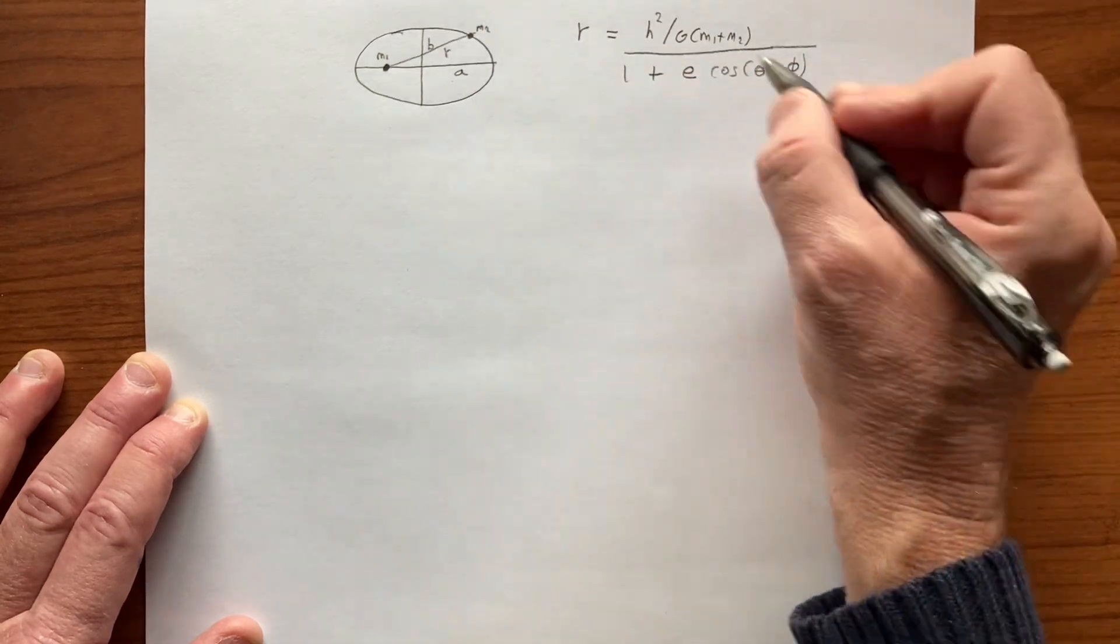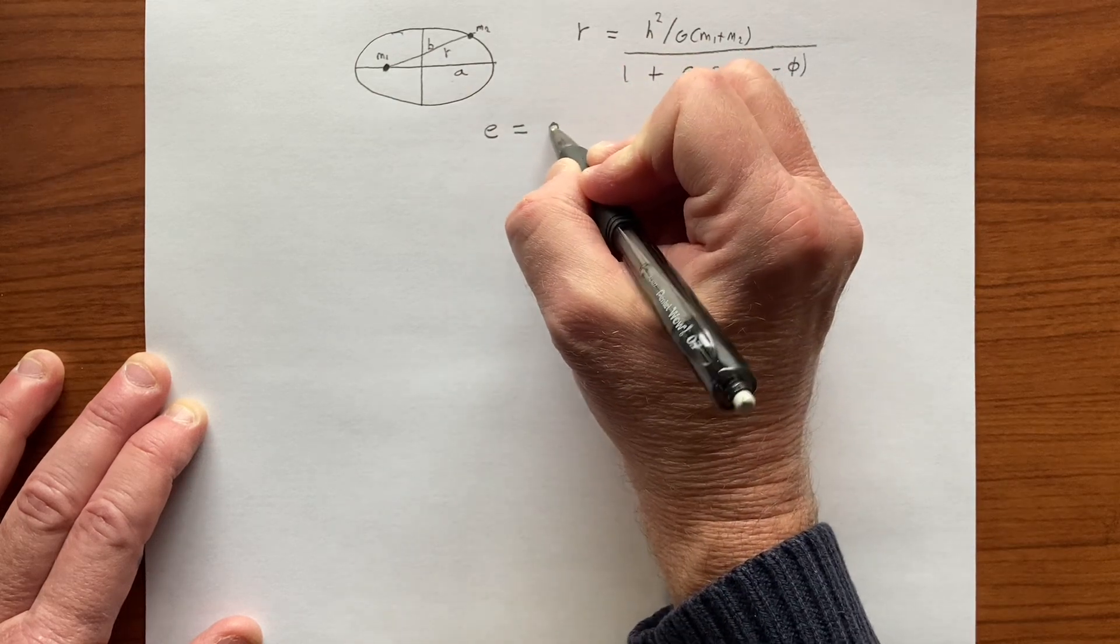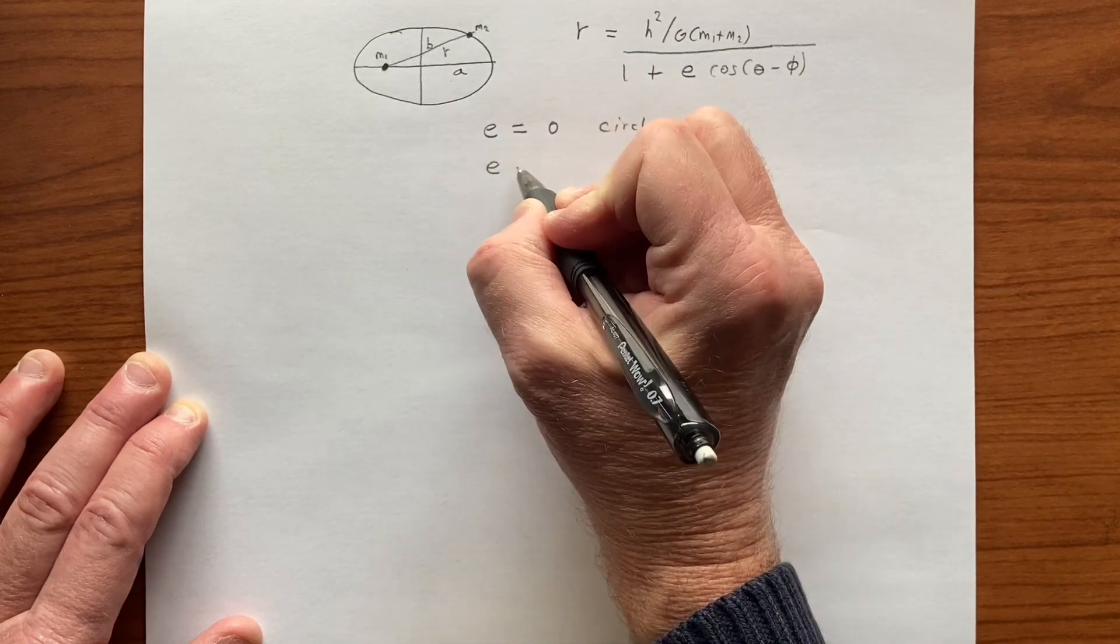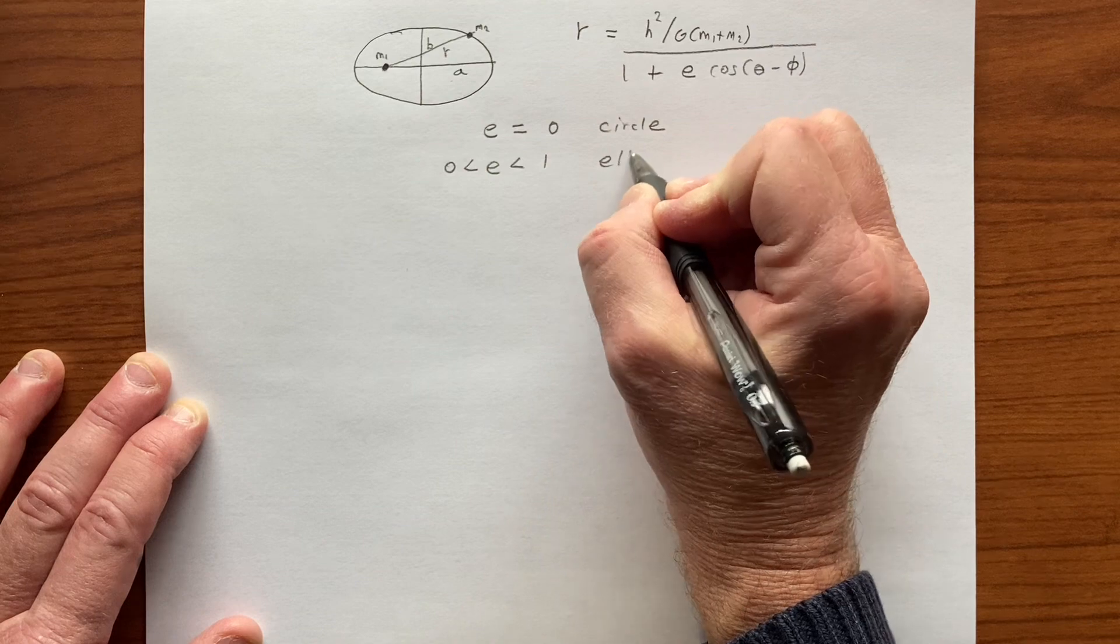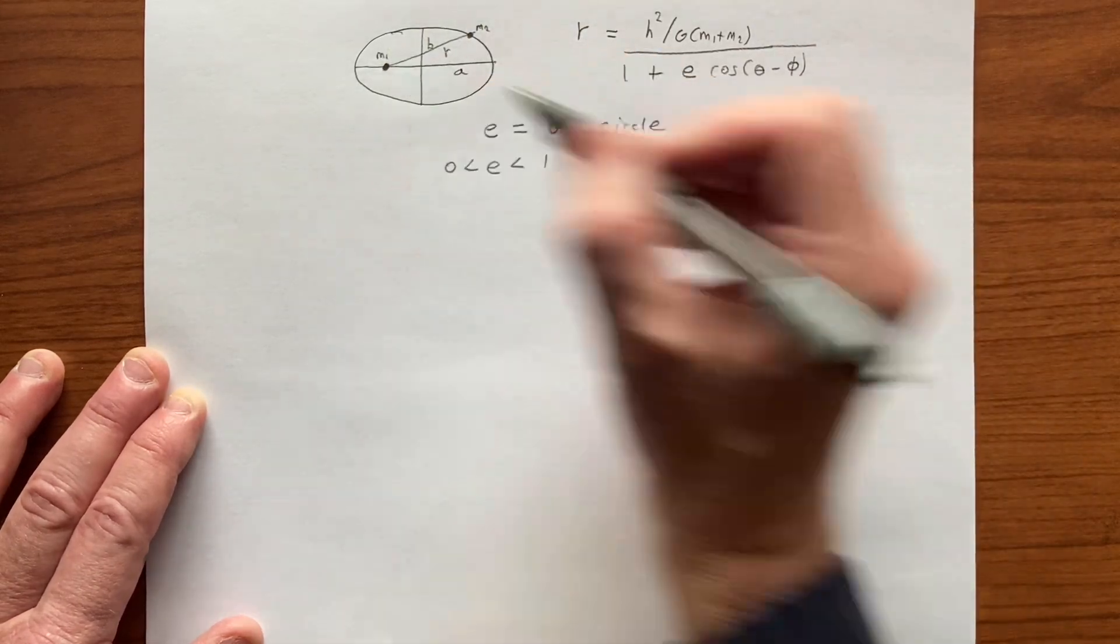Which for an ellipse, first of all, to notice that if E is equal to 0, we just get one value of R. If E is greater than 0, less than 1, some number in between there, we get this kind of geometry.